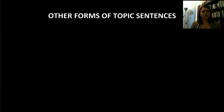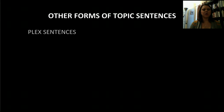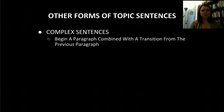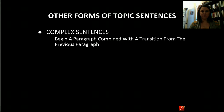There are a couple of other forms of topic sentences you can experiment with. The first is complex sentences. Usually this is when you begin a paragraph combined with a transition from the previous paragraph. If you want to continue a closely related thought — a slightly different topic where you're finishing up a point and moving on — you may want to experiment with a complex topic sentence.